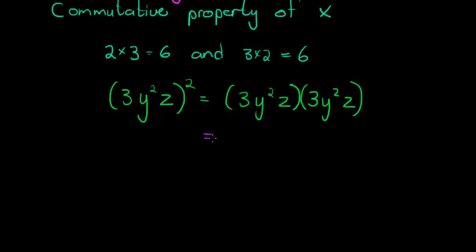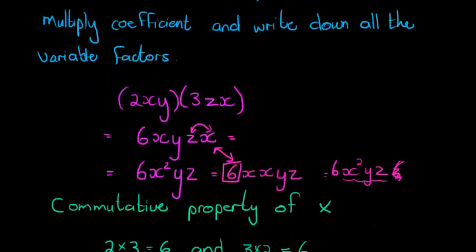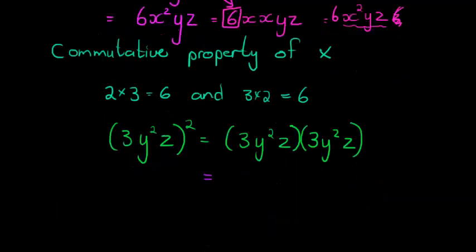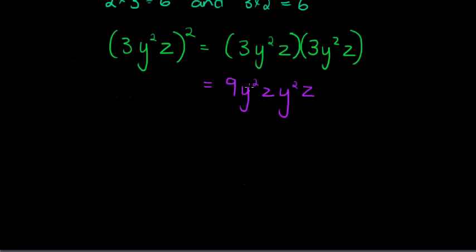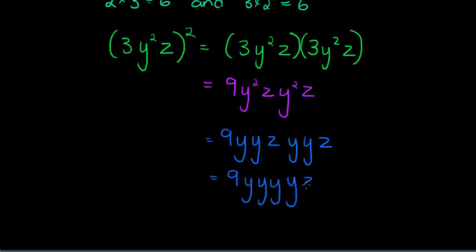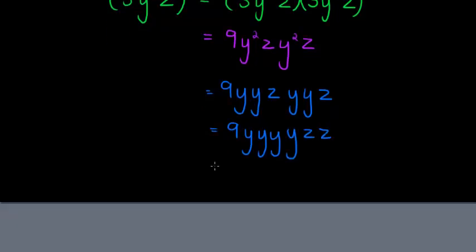Now we see, using the way that we multiply two monomials, we just multiply coefficients and write down all the variable factors. So 3 times 3 is 9, then y²z, y²z. Let's quickly see: y² actually means yy, and z, and then yy again, and z. When we do the commutative property, we can write this as 9yyyy zz. That can be written much simpler by saying 9y⁴z².